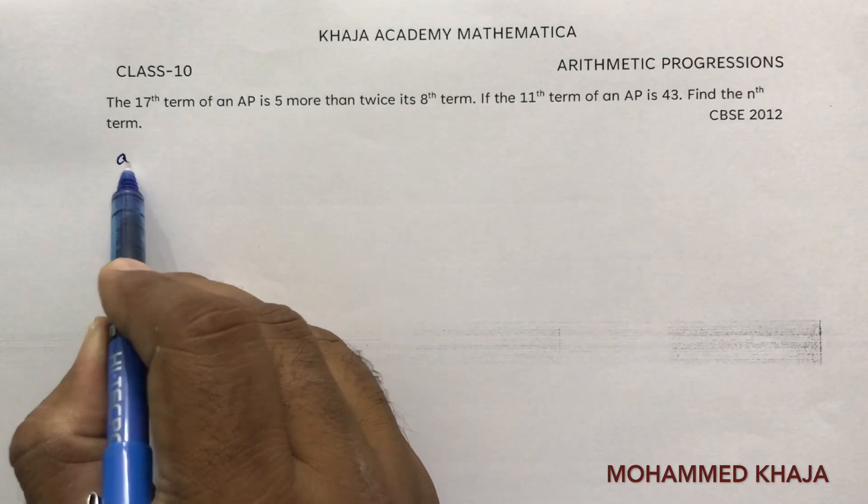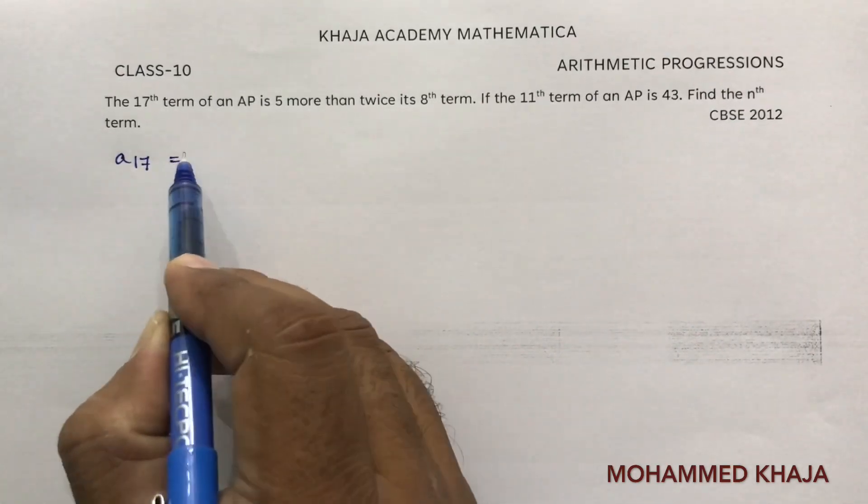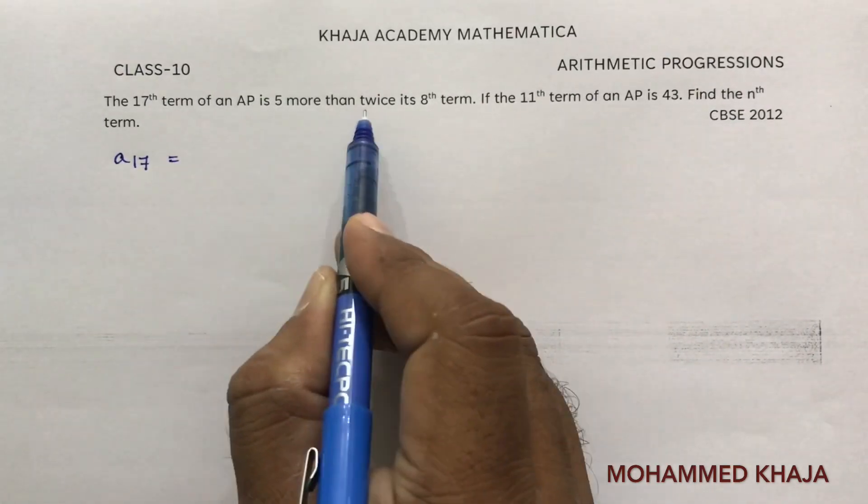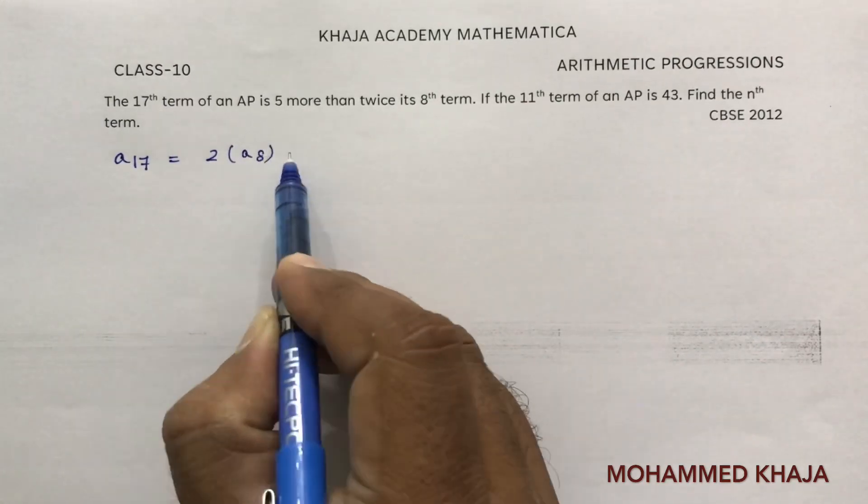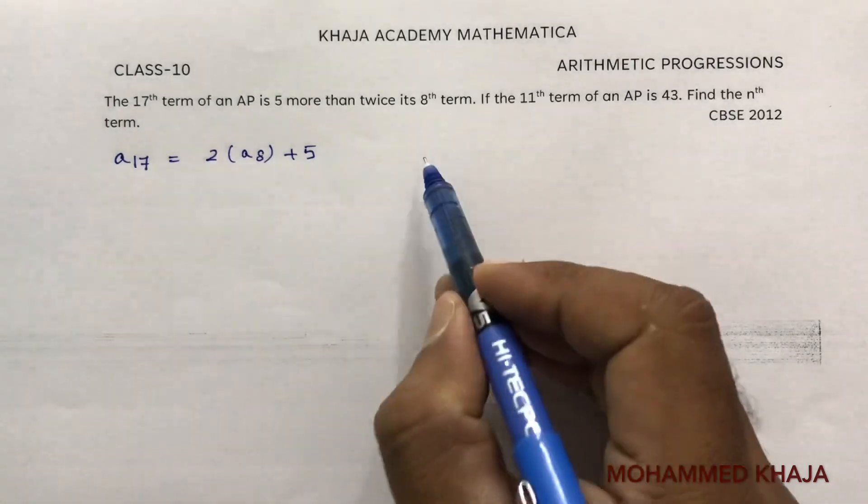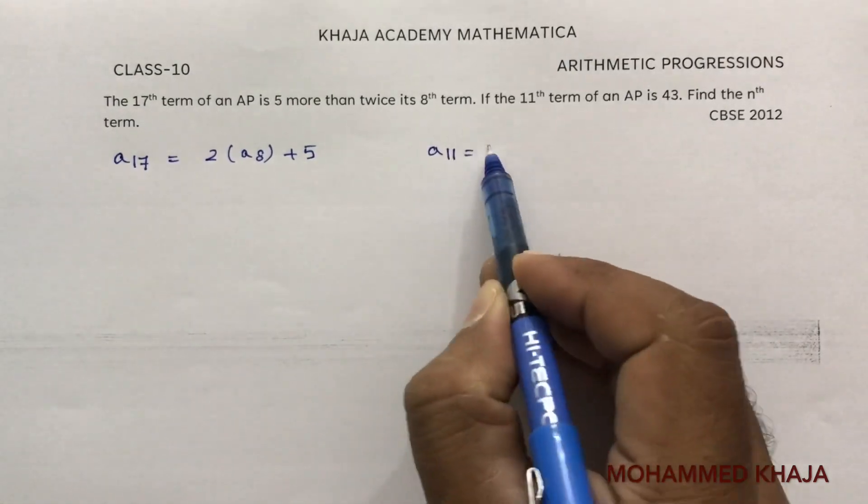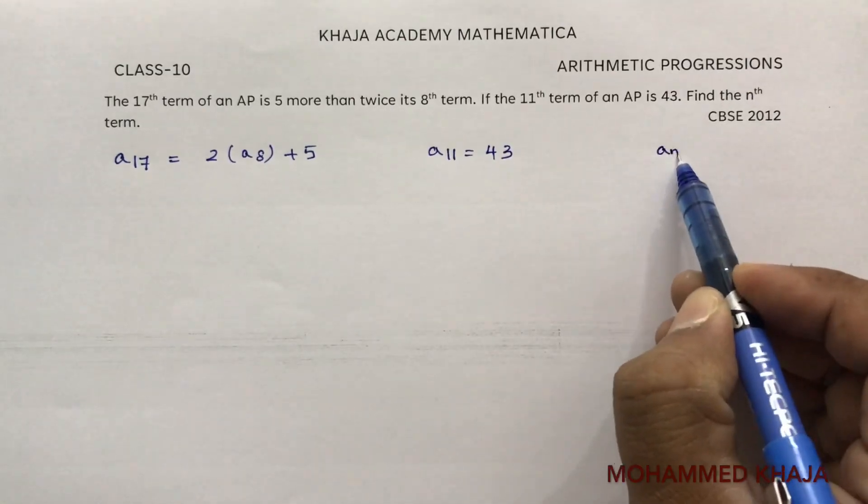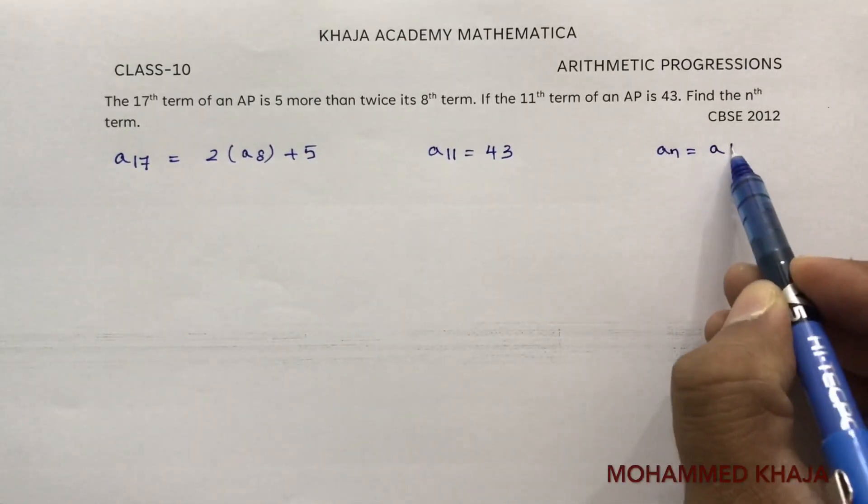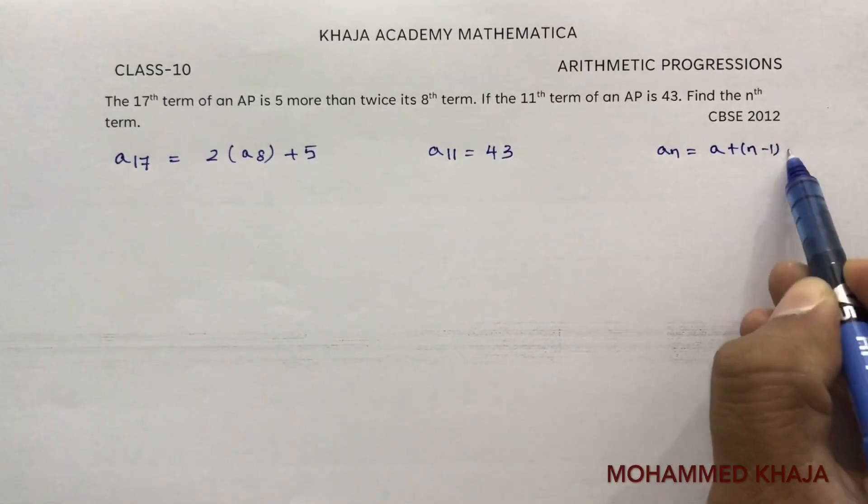So twice its 8th term plus 5. Next they told 11th term is 43. We need to find nth term. The nth term formula is a plus n minus 1 into d.